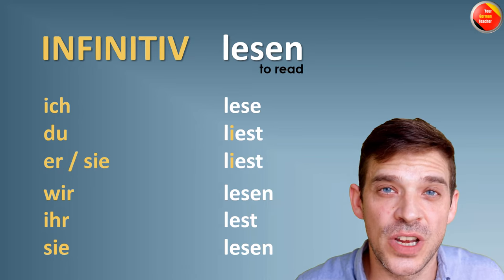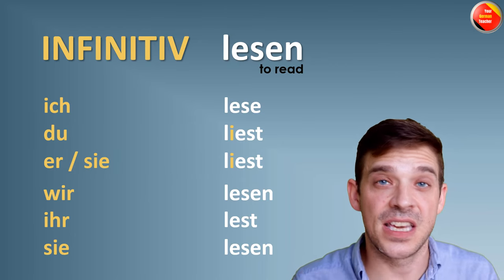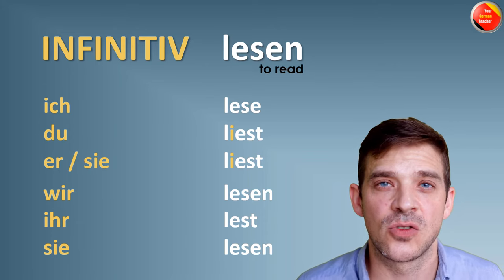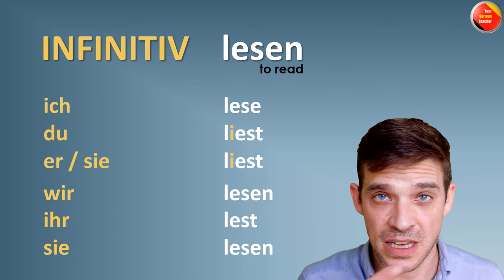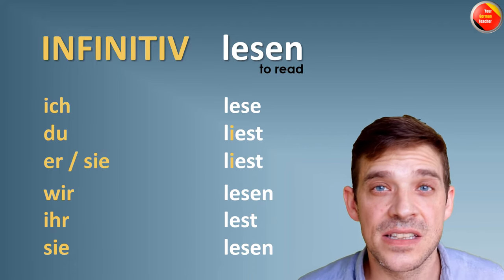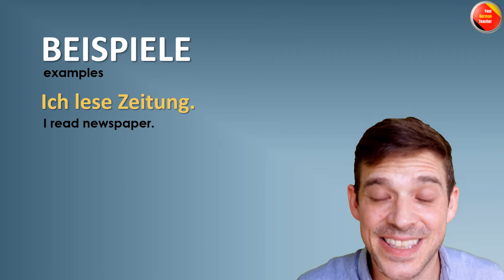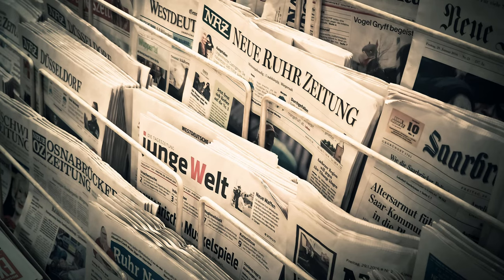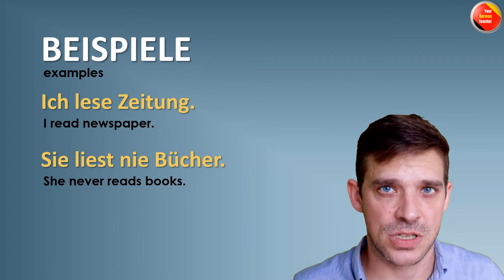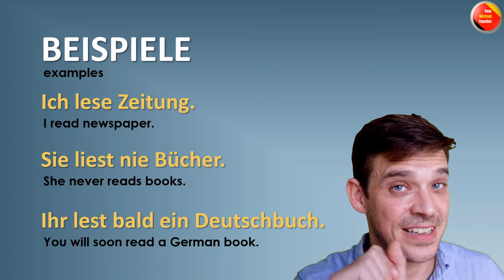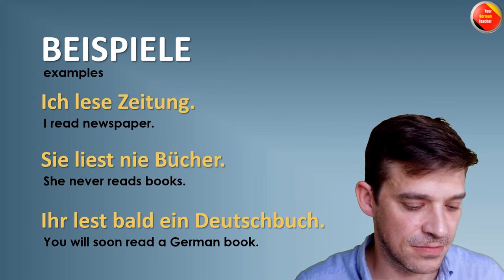Next verb is LESEN — to read. Again, only irregular in the second and third person singular. Conjugation: ich lese, du liest, er/sie liest, wir lesen, ihr lest, sie lesen. Examples: Ich lese Zeitung — I read newspaper. Sie liest nie Bücher — she never reads books. Ihr lest bald ein Deutschbuch — you guys are gonna soon read a German book, for sure.